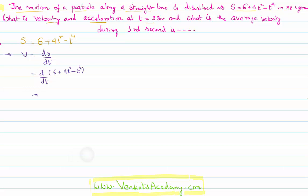Differentiation of 6, which is a constant, is 0. Then differentiation of 4t²: 4 is a constant, so we take d/dt of t², minus d/dt of t⁴. There is a basic formula in differentiation: differentiation of xⁿ is equal to n·xⁿ⁻¹. I want to use this formula.